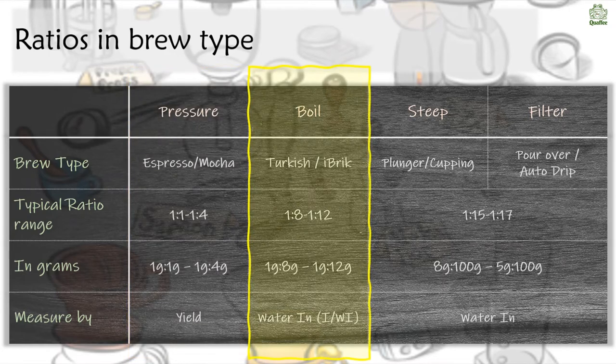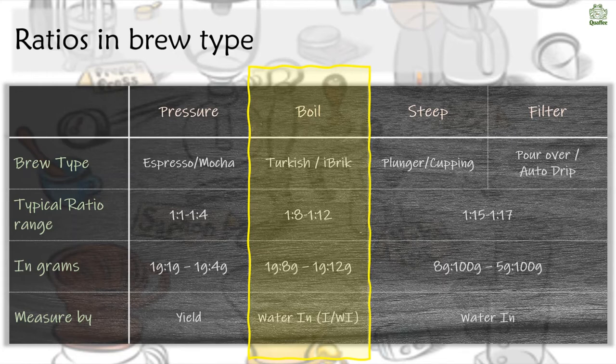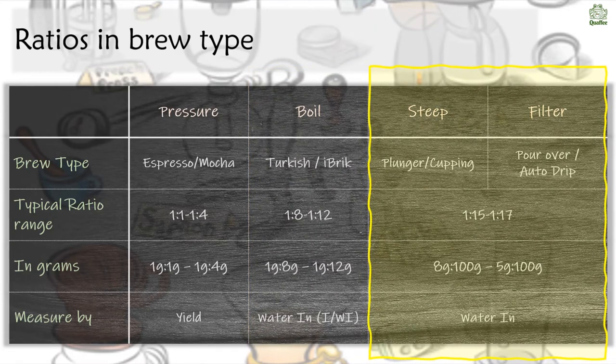Next is boil — or ibrik, or Turkish. This is when you add coffee into a pot and boil it. A lot of the origin trips I've been on, this is exactly how they brew their coffee in a large kettle, and some parts of Norway also boil water. For ibrik or Turkish specifically, the ratios vary from 1:8 to 1:12 — meaning one gram of coffee to 8 or 12 grams of water in. Each person will have their particular preference, and importantly here we're measuring water in, not yield.